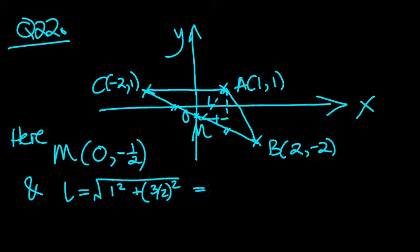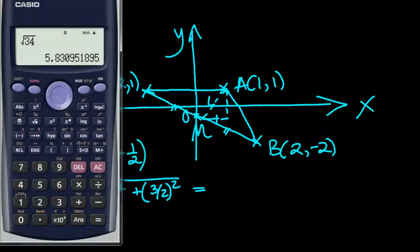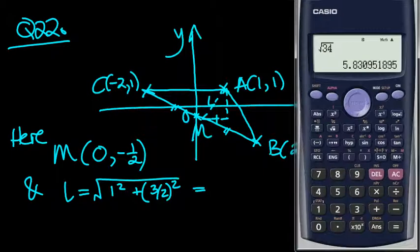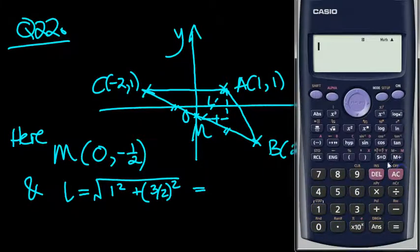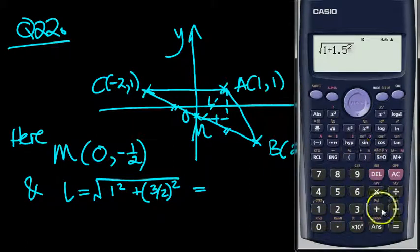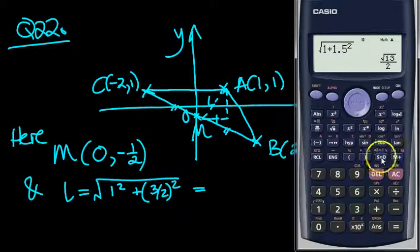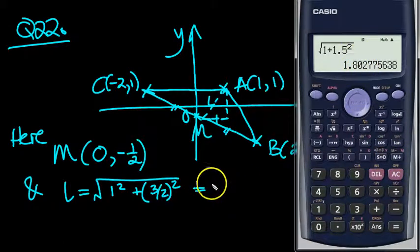So, let's just tap that in the calculator there. Okay, so we've got 1 squared, which is 1, plus... oh, I better put them all in a square root. So, square root, and then we've got 1, plus 1.5 squared.